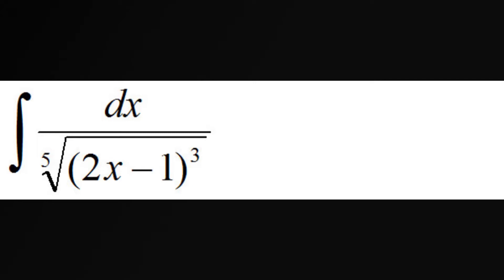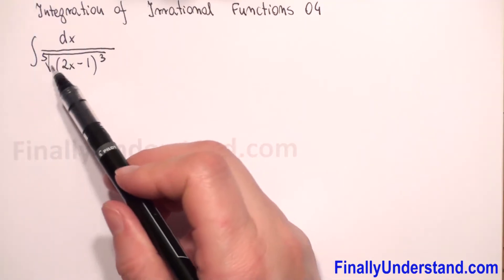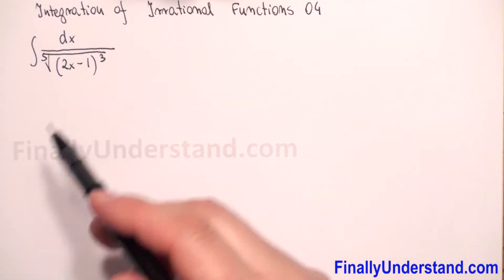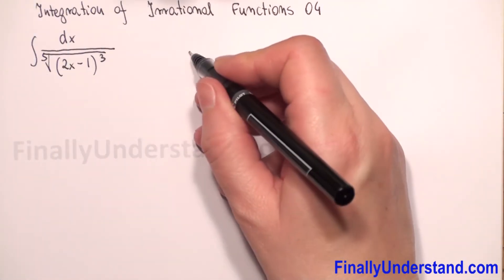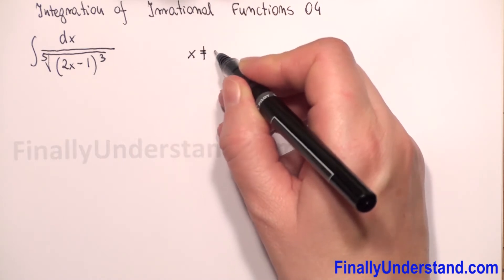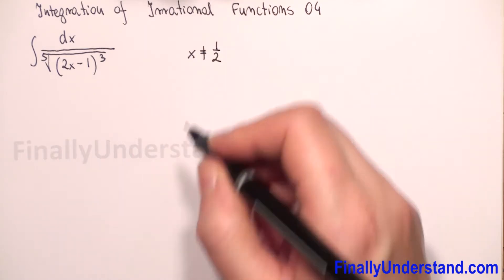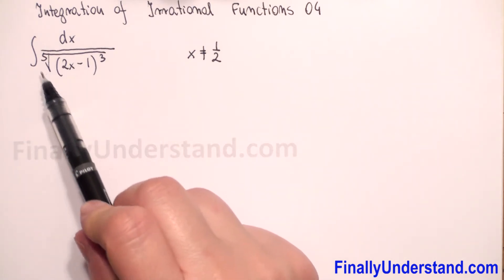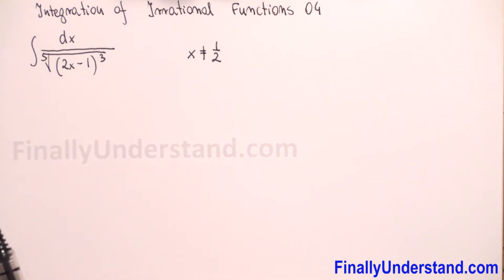We have an integral of an irrational function. First, because we have in the denominator 2x minus 1, we cannot have zero in the denominator, so x must be different from one-half. We also have a fifth root, and we can calculate the fifth root of all real numbers, so there is no additional restriction there.